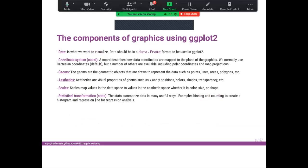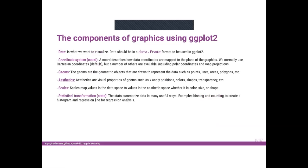Now let's move to the components of graphics using ggplot2. There are about six main components that should be known before starting to create graphics. The first and main one is the data — what we want to visualize — and it should be in a data frame format. We also have the coordinate system, which describes how data coordinates are mapped in the plane of the graphic.